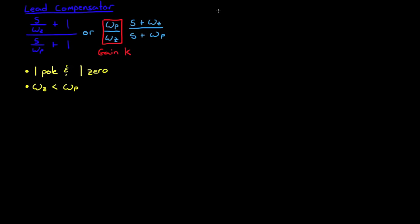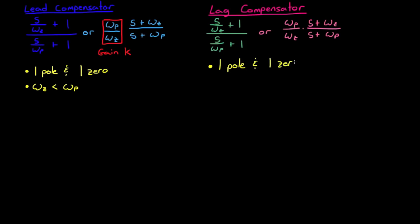Now if I draw the equation for the transfer function for a lag compensator, you're going to notice that they're remarkably similar. In fact, they're exactly the same if you draw them without numbers, if you just use omega z and omega p. And just like a lead compensator, a lag compensator is made up of one pole and one zero, however in this case, the pole is closer to the origin than the zero.